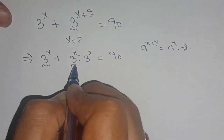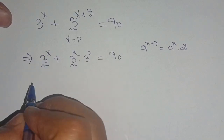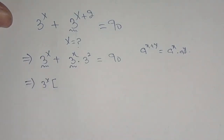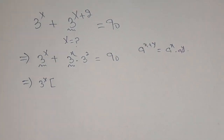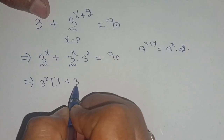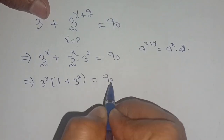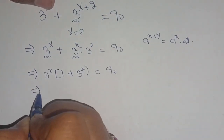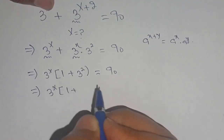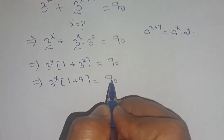From this term as well as from this term, we can take out 3 raised to power x, and we get 3 raised to power x times — remaining 1 plus here remaining 3 raised to power 2 is equal to 90. We have 3 raised to power x times 1 plus 3 raised to power 2.